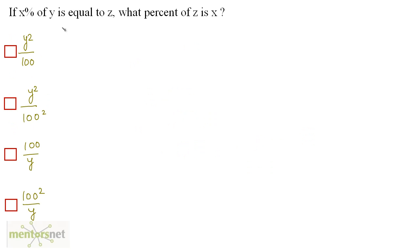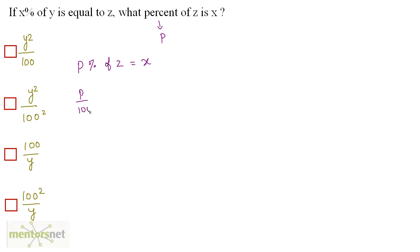If X percent of Y is equal to Z, what percent of Z is X? Let us assume this percent is P. So P percent of Z is X, meaning P upon 100 times Z equals X. Therefore P is equal to X upon Z times 100, and that's what we have to find out.